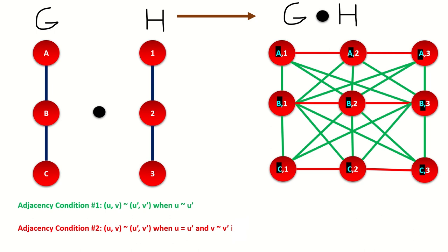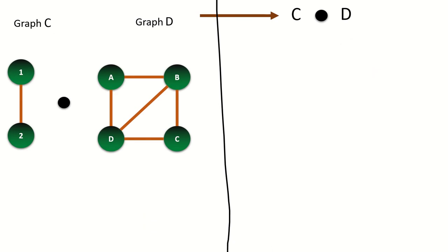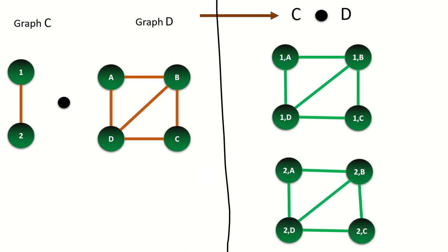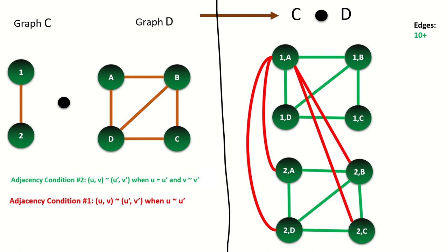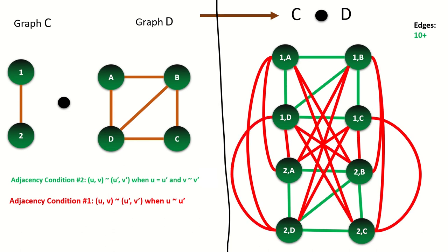Now that we have this intuition, let's tackle two more examples. What is the lexicographic product of these two graphs? First, copy the right graph for each vertex in the left graph — this gives us the adjacencies resulting from our second adjacency condition. There are only two vertices in the left graph and they are adjacent, so by the first adjacency condition, every vertex in our first copy will connect to every vertex in our second copy. In red, I've highlighted the edges that result from the first adjacency condition, and in green, the edges that result from the second adjacency condition. Notice the total number of edges in this product is 26.